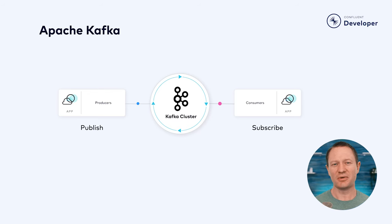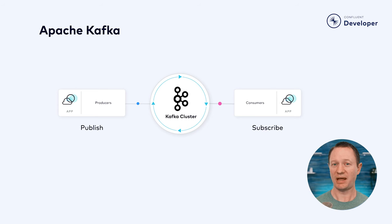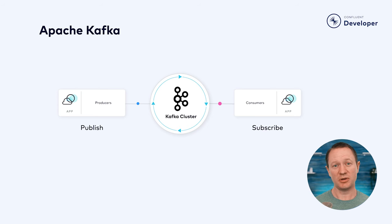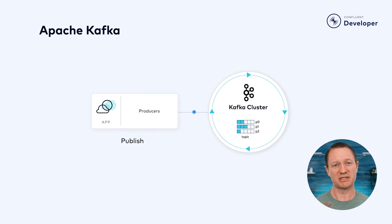To understand what a producer is and how it fits into the overall picture of creating a real-time data streaming platform, let's talk a little bit about Apache Kafka. Apache Kafka is a distributed streaming platform that provides a publish-subscribe messaging system. In Kafka, producers are responsible for publishing messages to a Kafka topic.